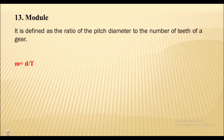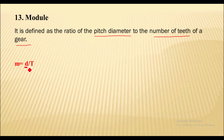Next term is the module. Module is the reverse of diametral pitch — it is the ratio of the pitch circle diameter (d) to the number of teeth (T) on a gear. It is expressed in mm. Two mating gears will have the same module.